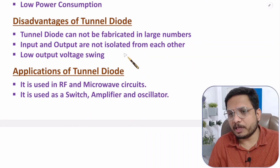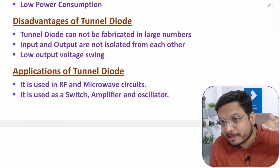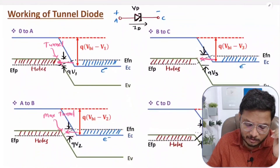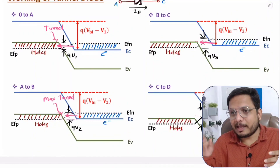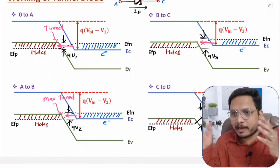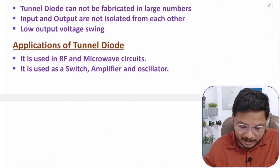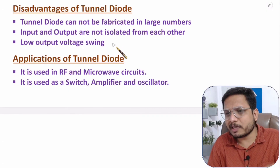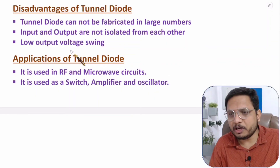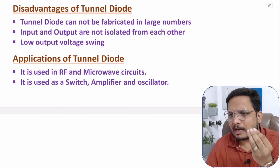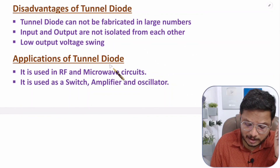Disadvantages include: it cannot be fabricated in large numbers because highly doped p and n type material makes mass production difficult; inputs and outputs are not isolated from each other — it is a two-terminal device and back current in circuits can damage the diode; and it has a lower output voltage swing, typically around 1.1 V.